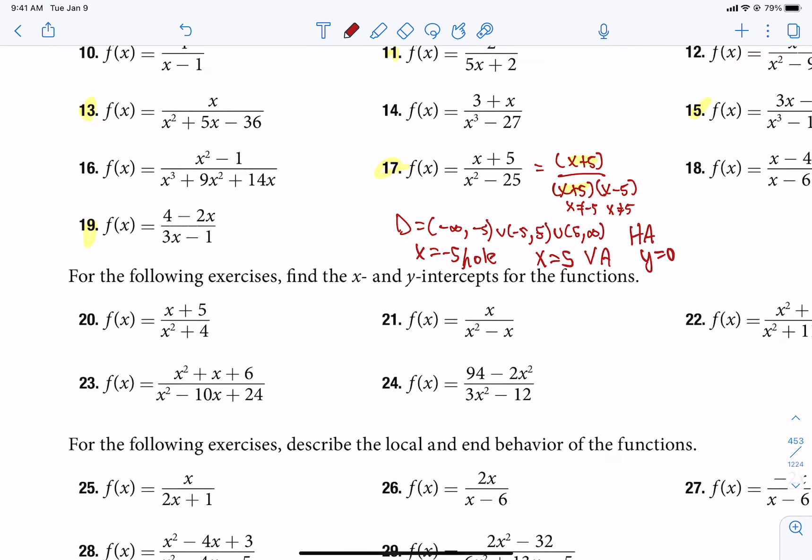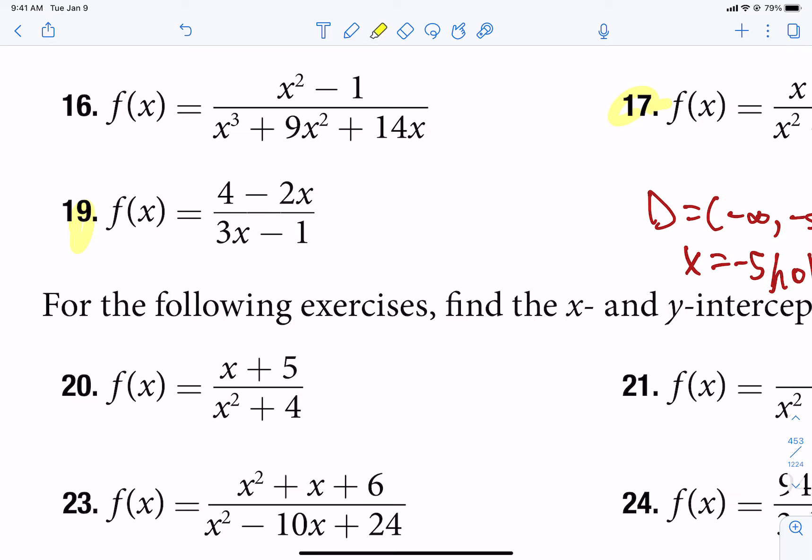But if we look at 19, the degree in the top is an x, the degree in the bottom is an x, and so they match. Well, what do we do when that happens? The horizontal asymptote, we just get to use the coefficients that are attached to those x. So it's just going to be y equals, for our horizontal asymptote, we're going to use the coefficient stuck to our x on top, the coefficient stuck to our x on the bottom, that's our horizontal asymptote.